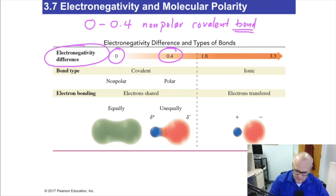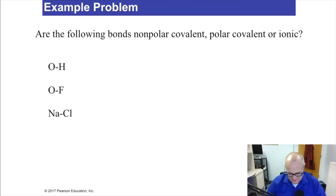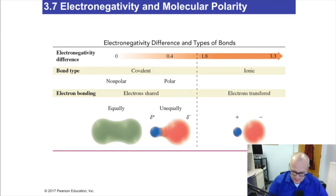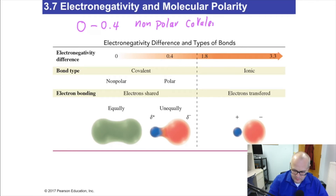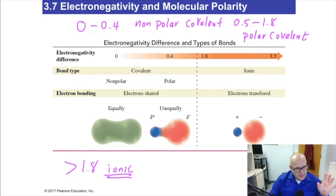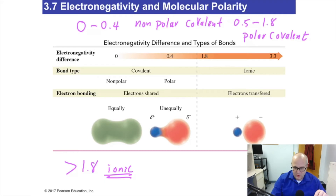Between 0 and 0.4 difference in electronegativity: nonpolar covalent. Between 0.5 and about 1.8: polar covalent. And if you're greater than 1.8, you're ionic. So: 0–0.4 is nonpolar covalent, 0.5–1.8 is polar covalent, and greater than 1.8 is ionic.